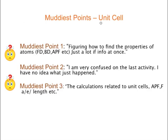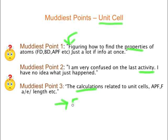Hello! Today's screencast is all about muddiest points concerning the unit cell. Below we have some direct quotes from students. All of them are referring to how to find the properties, calculations, or the very last activity. That last activity is finding all of the values, such as the atomic packing factor, the coordination number, and everything like that for a face-centered cubic unit cell. In order to address all of these muddy points at once, I'm going to redo this last activity so that we can have a demonstration of how to solve these problems.